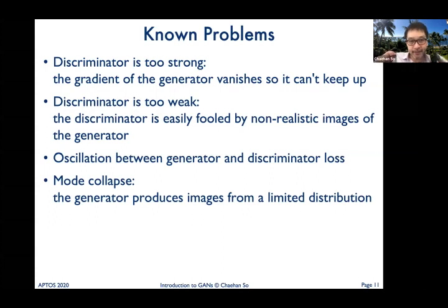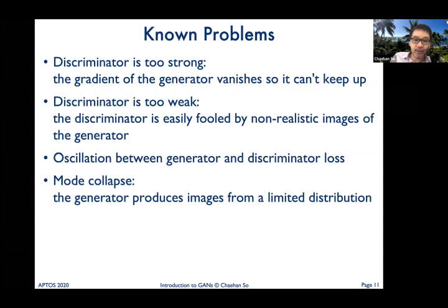Because of gradient descent, if the gradient becomes very small, there will be no change in the generator anymore — it will not try to make better fake samples. The opposite problem occurs when the discriminator is too weak: it always says 'that's a real image,' even though the generator did not do a good job.